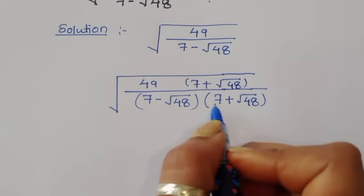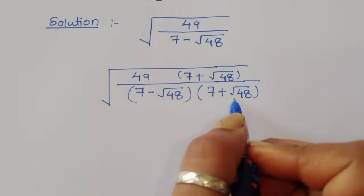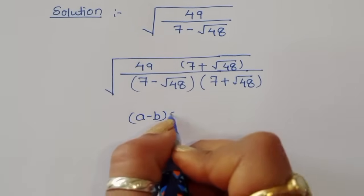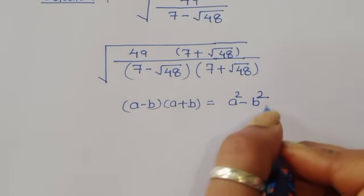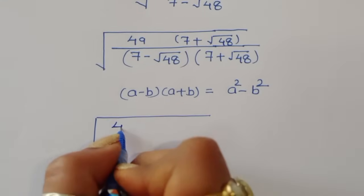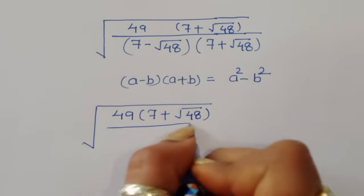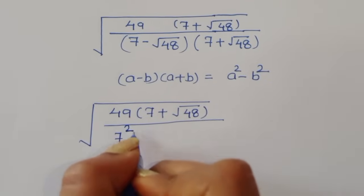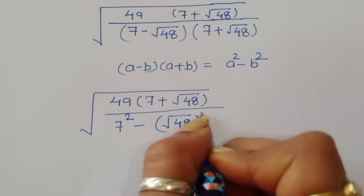Now, 7 minus square root of 48 times 7 plus square root of 48 — if this is a minus b and a plus b, then a minus b times a plus b equals a squared minus b squared. Using this formula, in the denominator we get a squared minus b squared, where a is 7 and b is square root of 48.